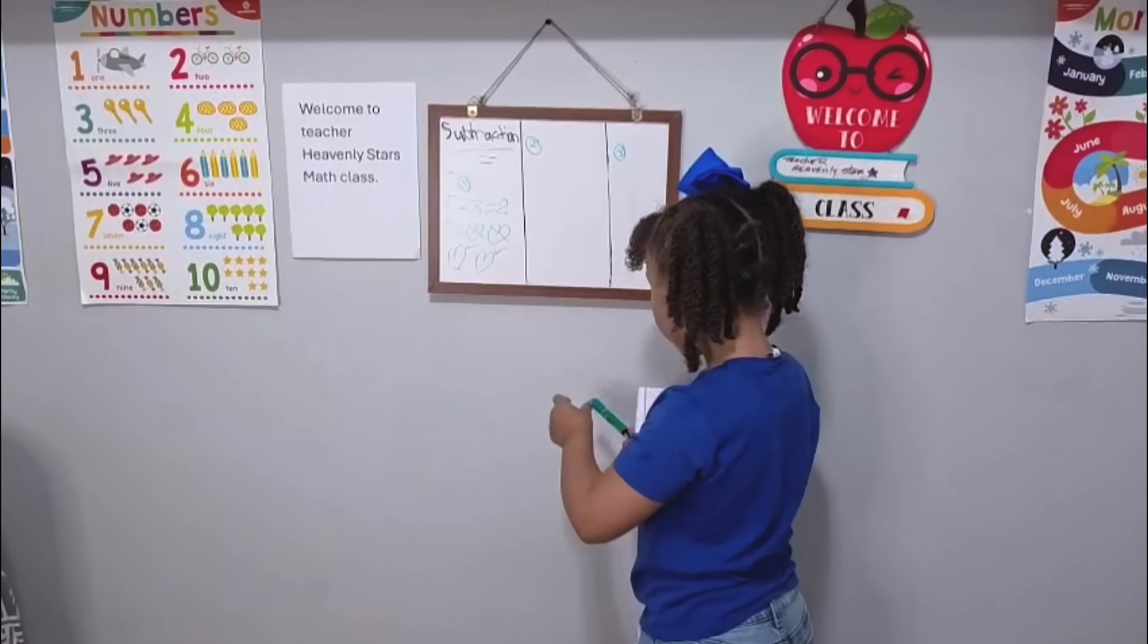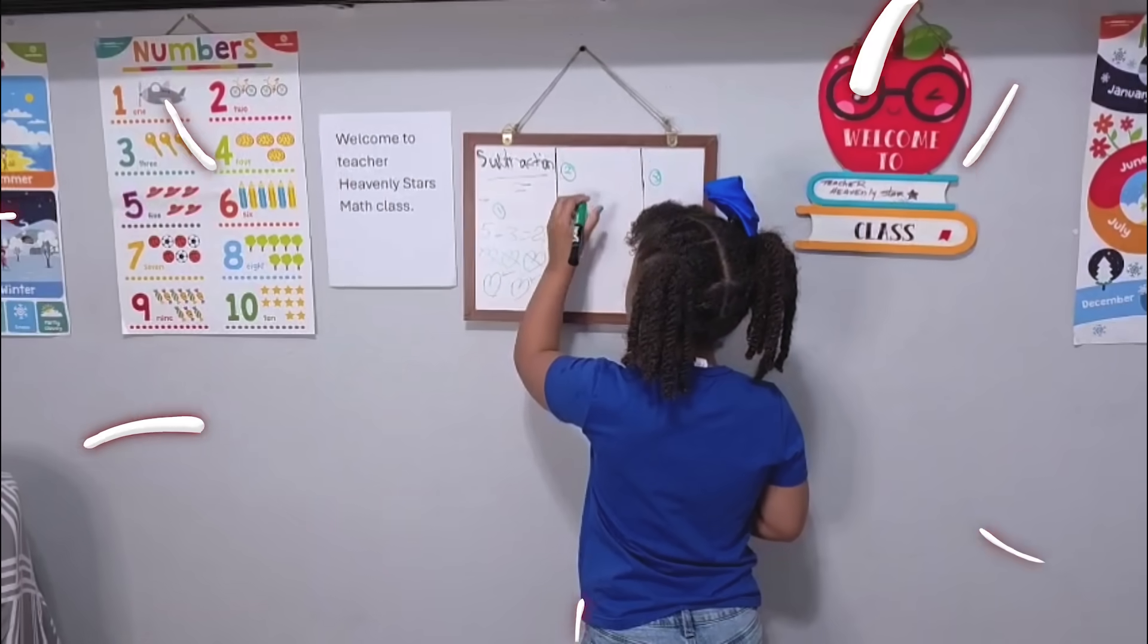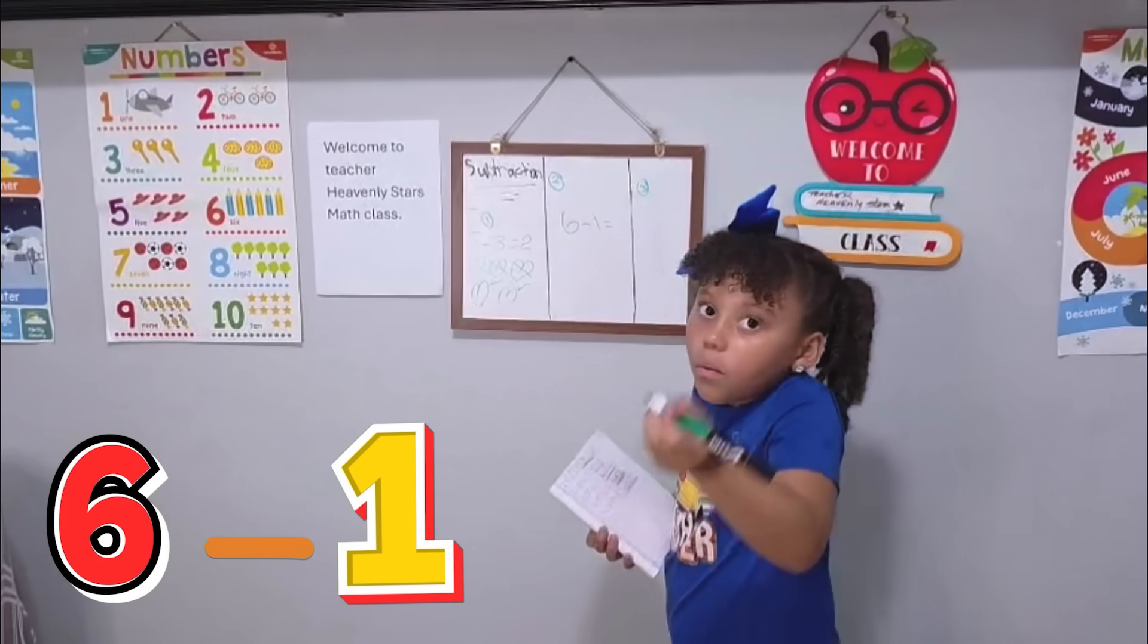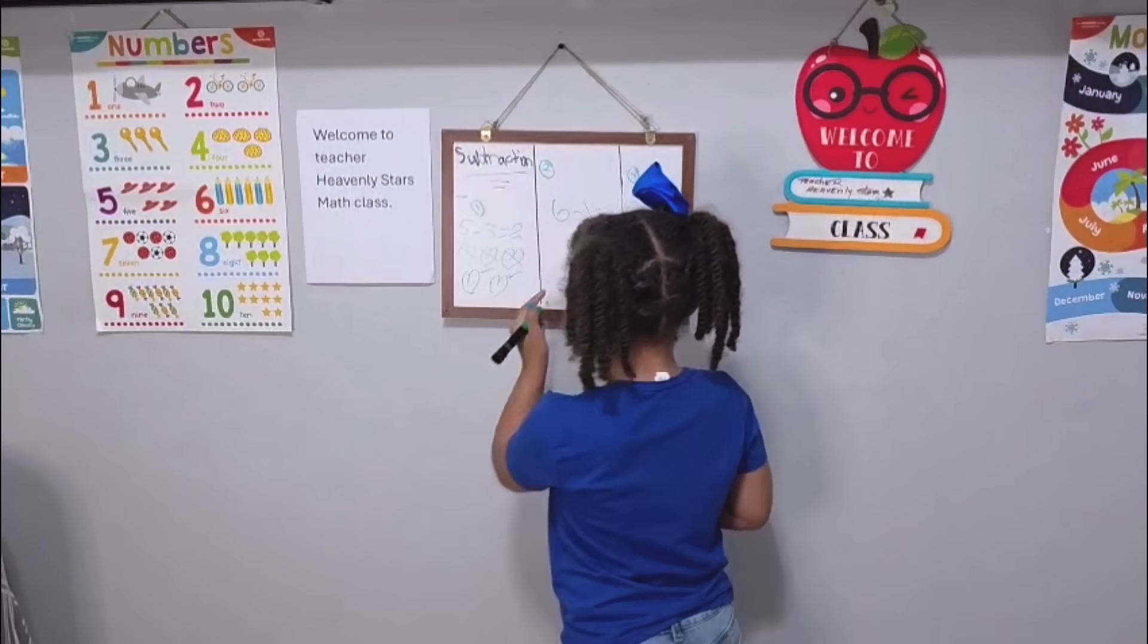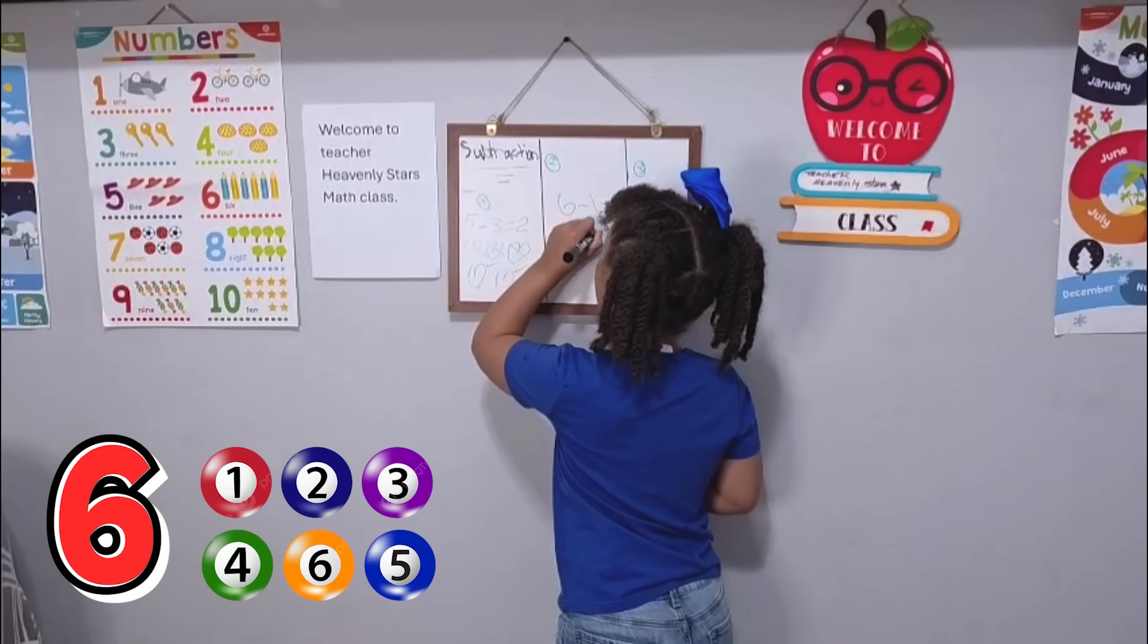Okay, number two is six minus one equals what. Okay so I have six balls.